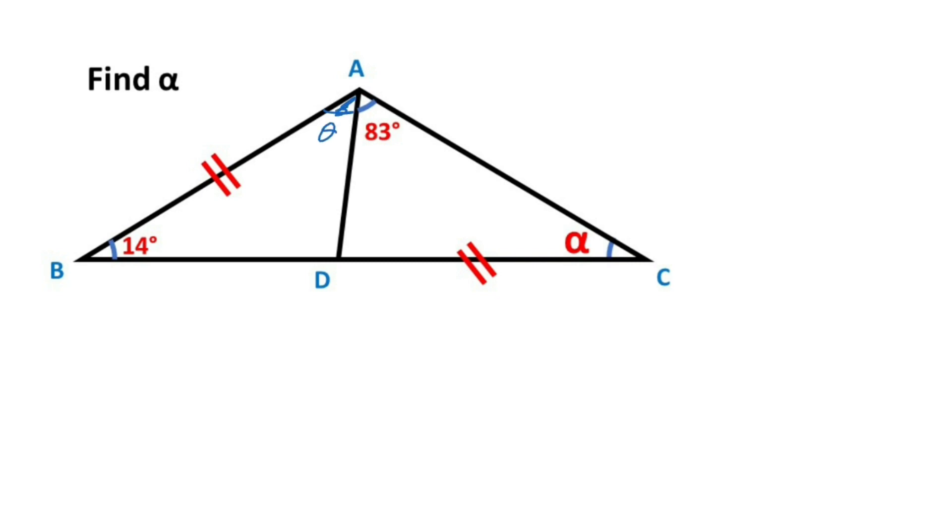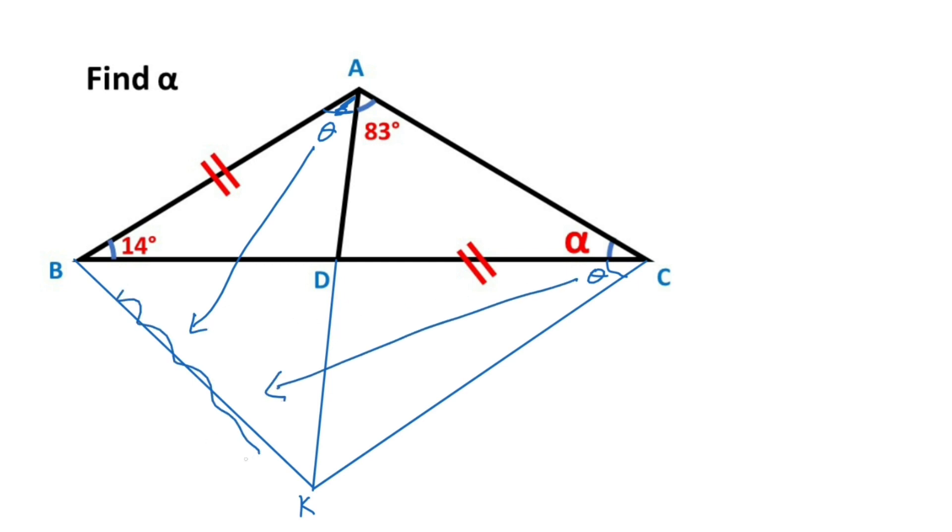First, let's call here theta, and then if we take here theta degrees like this, let's extend this corner and connect with B point like this. And I want to represent with K this point. Notice that opposite of the thetas are same side, right?